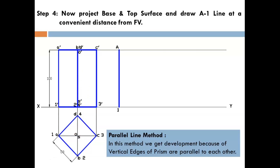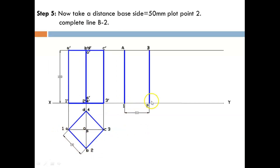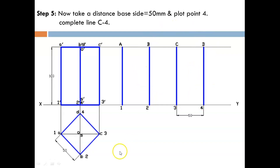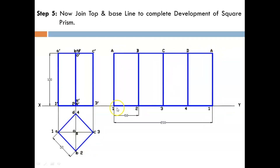After completing the front view and top view, we proceed with the development of the lateral surface using the parallel line method, already discussed for cylinders. In this method we use vertical edges which are parallel to each other. Draw a starting line at a convenient distance — this is line 1A, your starting point. For one complete rotation, take 50 mm to get edge 2B, then another 50 mm for 3C, then 50 mm for 4D. Since one complete rotation means ending at the starting point, take another 50 mm and plot line 1A again. Then join the top and bottom lines to complete the development.